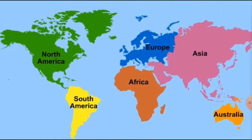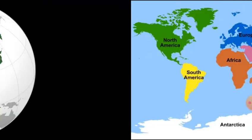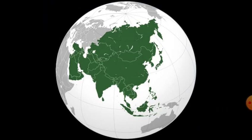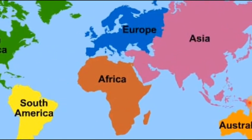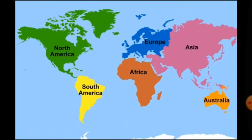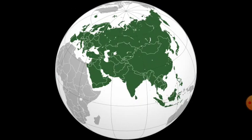We will start first with Asia. Asia is the largest continent. It covers about one-third of the total land area of the earth. Asia lies in the eastern hemisphere, and the Tropic of Cancer passes through Asia. Asia is separated from Europe by the Ural Mountains on the west. The combined land mass of Europe and Asia is called Eurasia, that is Europe plus Asia.